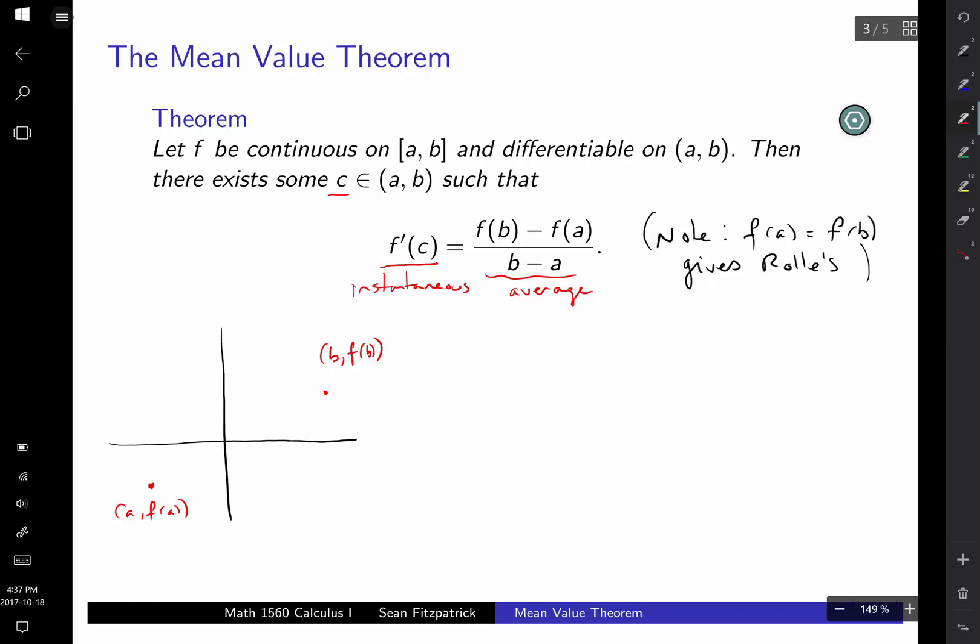And so the average change, well, we know what the average change looks like. The average change is just what you get if you traveled along this straight line at constant speed or a constant rate of change, you get your rise over run, you get your delta y, delta x, and we can work that out.